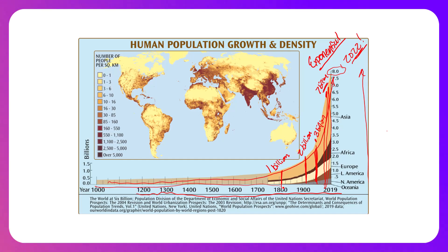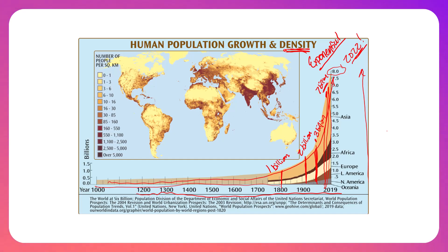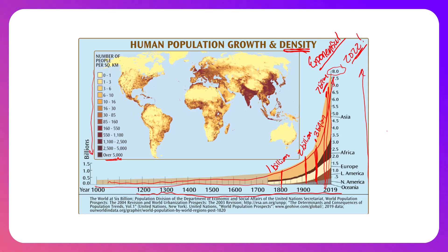This graphic also shows the density of the population on Earth — you can see where humans are located and the density. As we get darker in the colors, we get more dense. When we look at the darker areas, that's where human population density is highest. When we think back to how populations are distributed, this seems to be distributed around resources, which means this would be a clumped distribution.